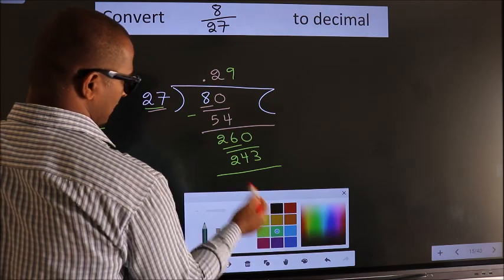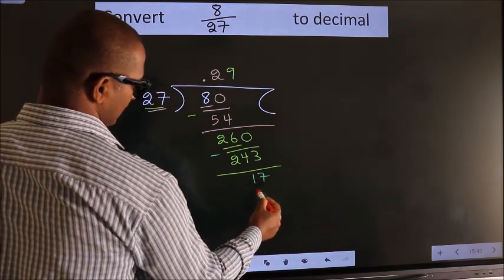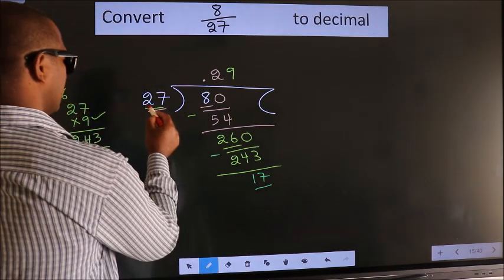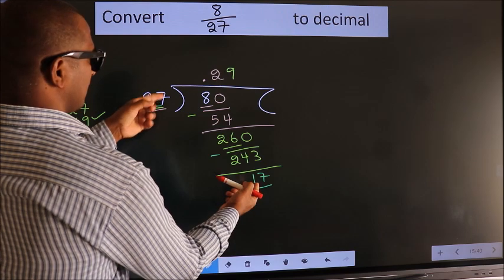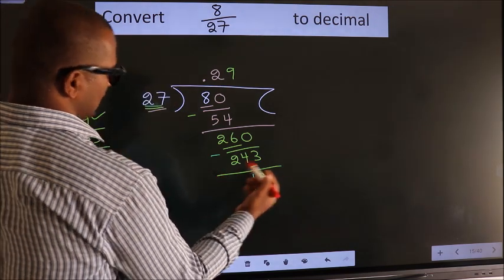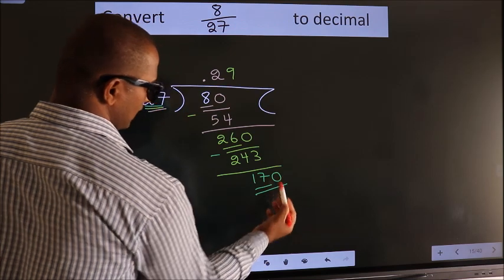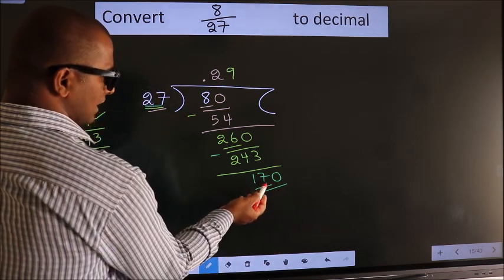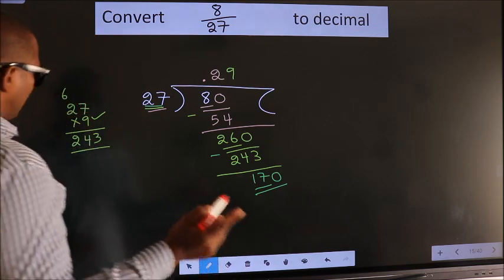Now we subtract. We get 17 here. We have 17 here, 27. 17 is smaller than 27. We already have the decimal so we can directly take 0. So 170, a number close to 170 in the 27 table, let us go with 5.